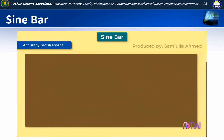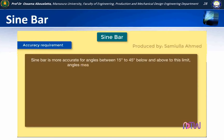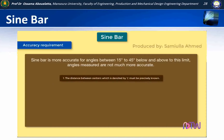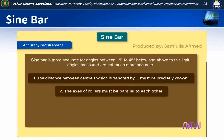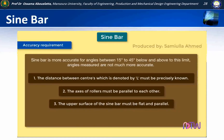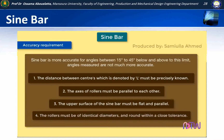Accuracy requirement of sine bar: The sine bar is more accurate for angles between 15 degrees to 45 degrees; below and above this limit, angles measured are not much more accurate. For a sine bar to be accurate, the following properties must exist: 1. The distance between centers (L) must be precisely known. 2. The axes of rollers must be parallel to each other. 3. The upper surface of the sine bar must be flat and parallel. 4. The rollers must be of identical diameters and round within a close tolerance.